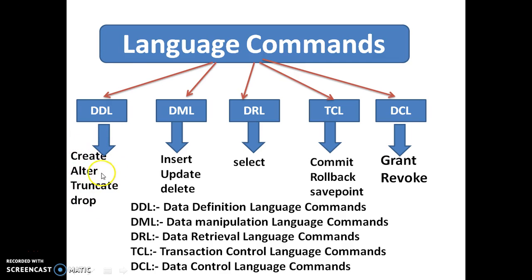The ALTER command is generally used for modifications to the structure of a table. For example, if you want to add a new column, change the data type of a column, change the size of a data type, or modify a stored procedure, trigger, or view — you use the ALTER command.